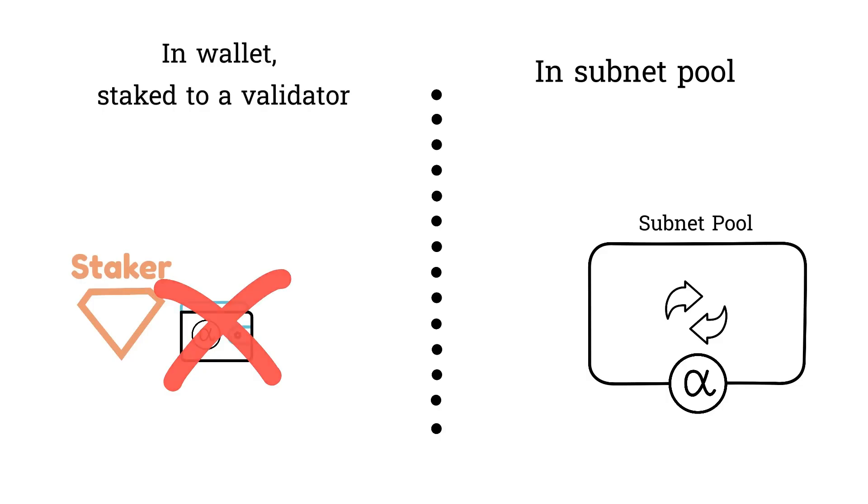Your alpha retains the same value regardless of which validator you choose, but your APR is affected by the performance of the validator you pick.